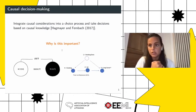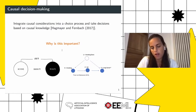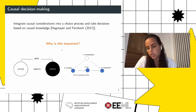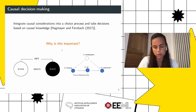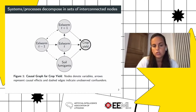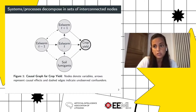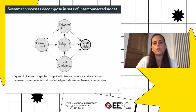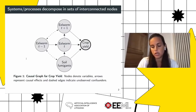For instance, if we look at this graph — which has been used in the past to analyze the causes of lung cancer and is taken from The Book of Why, a nice introduction to causality — you might want to analyze whether reducing smoking actually has an effect on lung cancer, or whether there are other aspects affecting this probability. There are many processes and systems in the real world that can be described by causal graphs and decomposed into sets of interconnected nodes.